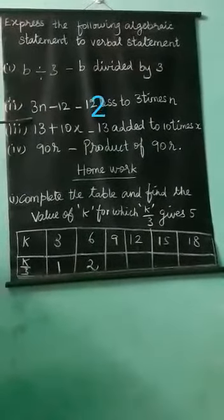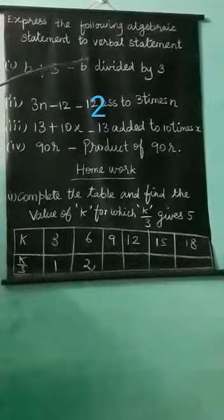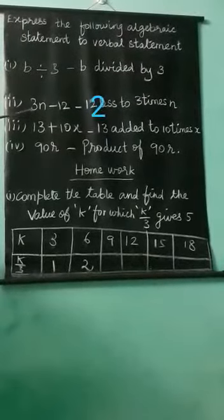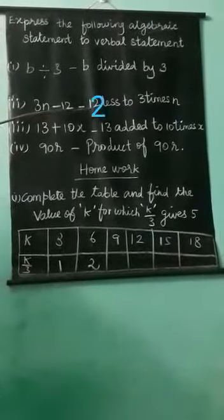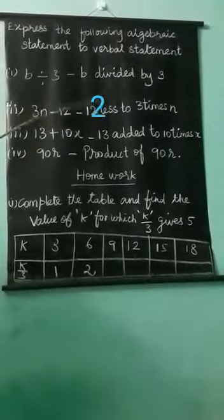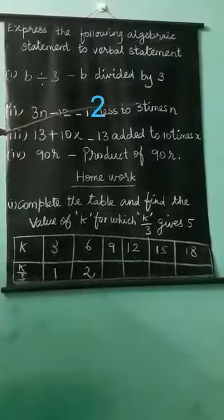Second one, 3N minus 12. How to write in verbal statement? First, 3N. 3N is here, minus 12. So, we write 12 less than 3 times N. 3 times N.